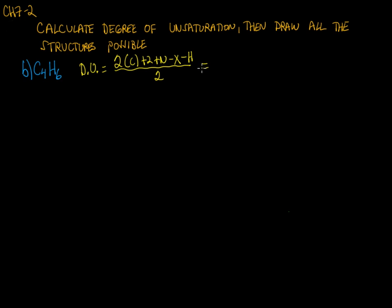It's a nice whole number. What this number means is that you could have two pi bonds. It's possible to have one pi bond and one ring, and it might also be possible to have two rings.